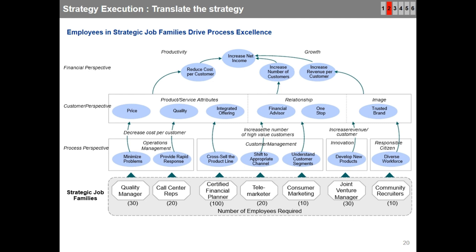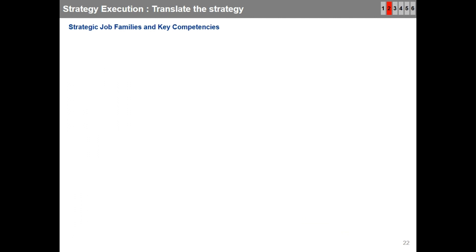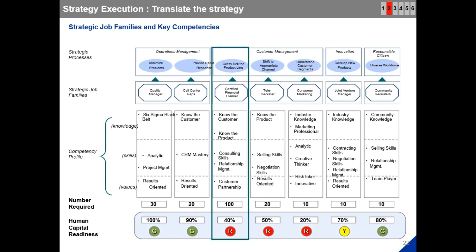You can identify the strategic job family against each key process and determine how many people are needed. The number of employees in a strategic job family depends on the type and size of the organization. You can find out the total number of employees required by the process and derive the competency profile, which is the input for prioritizing hiring, training, retaining, and promoting employees.